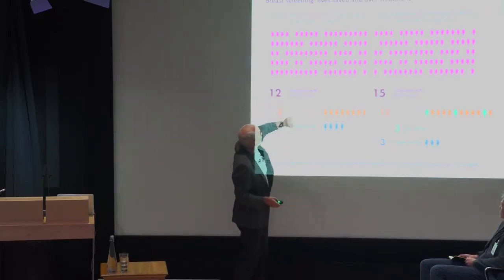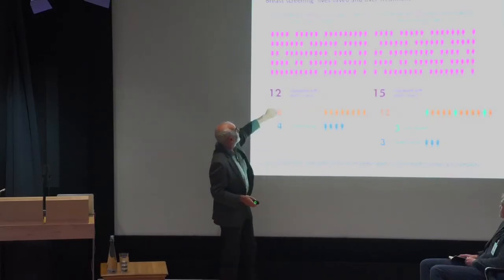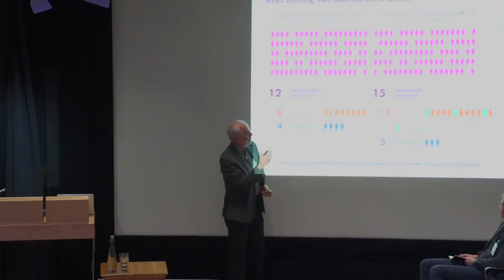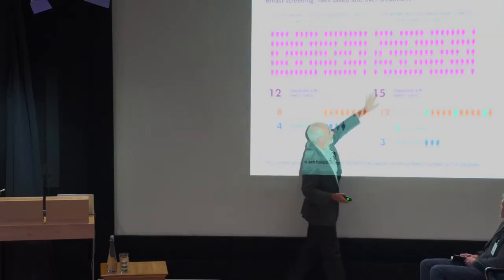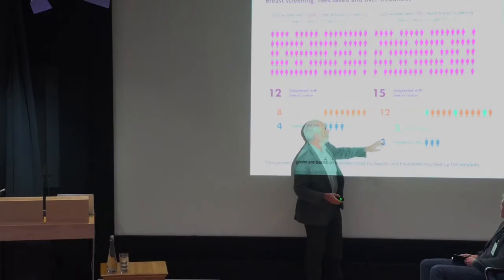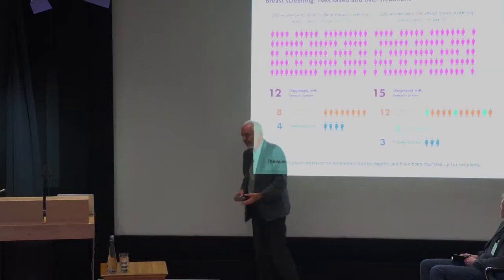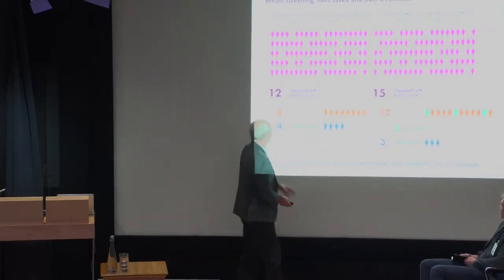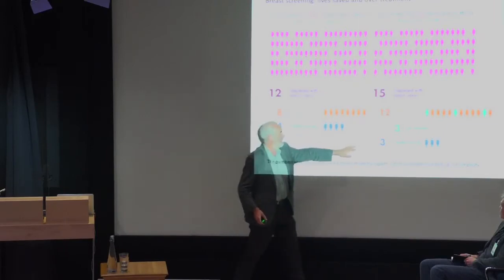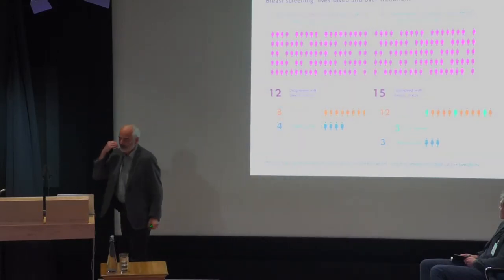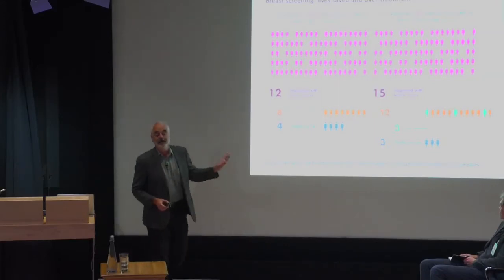Here's another approach: 200 women who don't attend breast screening over 20 years — 12 will be diagnosed with breast cancer, 8 will be treated and survive, and 4 will die. For 200 women going for screening, 15 will be diagnosed — three more. 12 will be treated and survive, but three will die. So the difference is: in the screened group, one fewer has died, but three have been over-treated — diagnosed and treated for a cancer that would not have affected them. Over a year in the UK, 1,300 women have their lives saved at the cost of 4,000 women being treated totally unnecessarily.